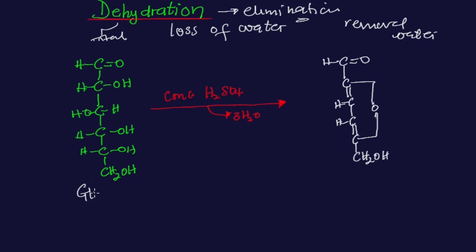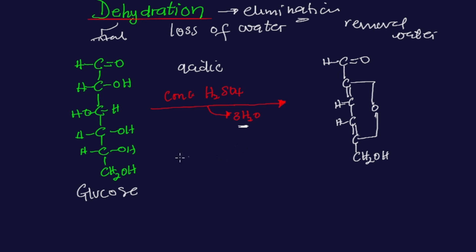Whenever monosaccharides undergo dehydration, the medium must be acidic. So monosaccharides in acidic medium, whenever they are treated with concentrated H₂SO₄ — that is sulfuric acid — they undergo elimination of three molecules of water. Dehydration is the type of elimination reaction that involves removal of three water molecules. Whenever we are talking about hexose sugar — that is any sugar with six carbon atoms — they undergo dehydration to give hydroxymethyl furfural.